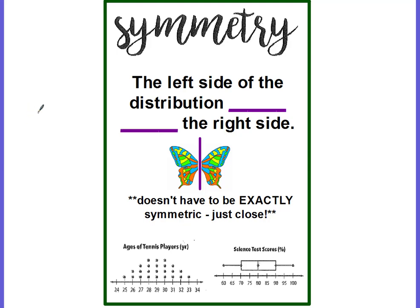Symmetry — you've already learned about symmetry in elementary school. It's where the left side of the distribution looks like the right side. Think of a butterfly. If you cut your butterfly in half, the two sides look alike — they're symmetric. So this is what we call symmetry. In our graphs, it doesn't have to be exactly symmetric, just pretty close.